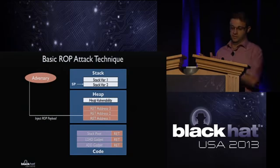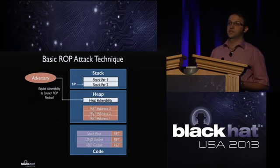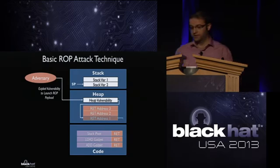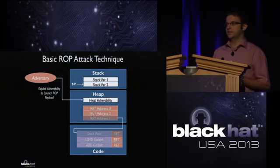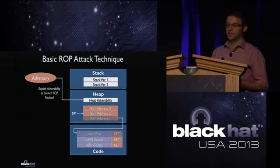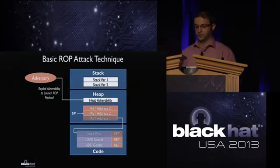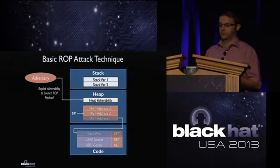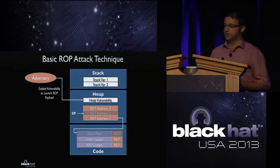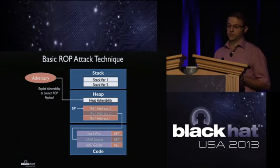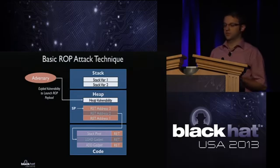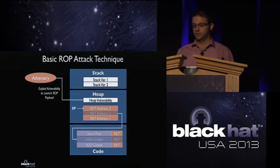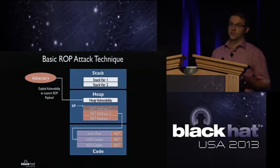Assuming a heap vulnerability, the attacker hijacks execution flow and redirects it to the stack pivot gadget, which sets the stack pointer to the beginning of the ROP payload. Once the RET instruction executes, return address 2 is popped from the stack and execution is redirected to the load gadget. The RET instruction also advances the stack pointer by four bytes. The attacker repeats this procedure — after the load gadget executes, the RET redirects execution to the add gadget.